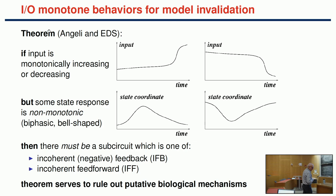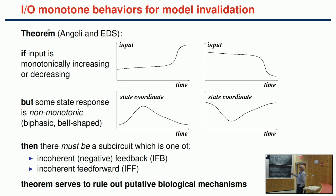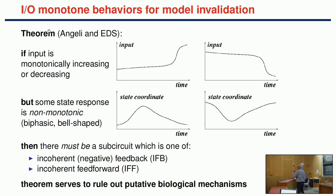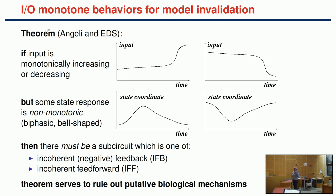A theorem proved with David and Charlie states: if you apply a monotonically increasing or decreasing input, and some state coordinate or output is non-monotonic, then there necessarily exists inside the system either an incoherent feedforward loop or a negative feedback loop. The good thing about this is that it helps with modeling validation.